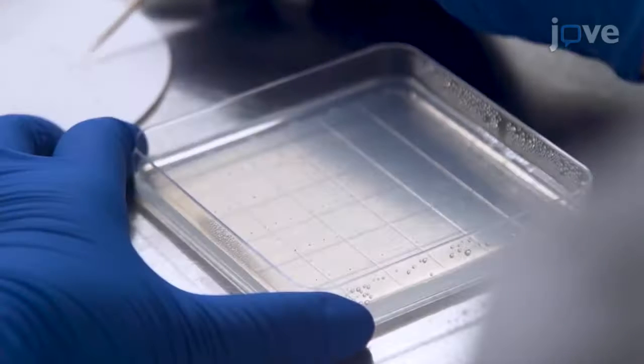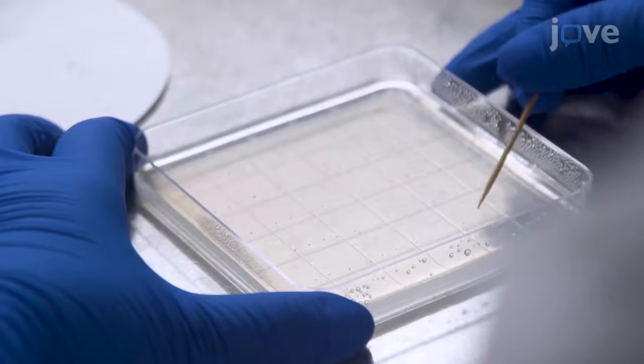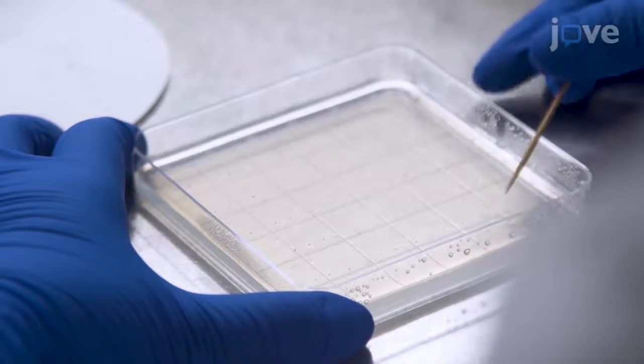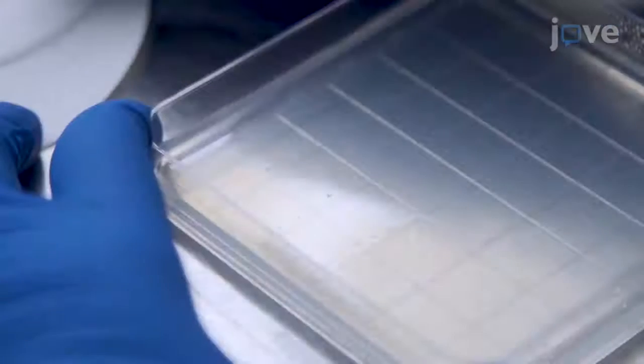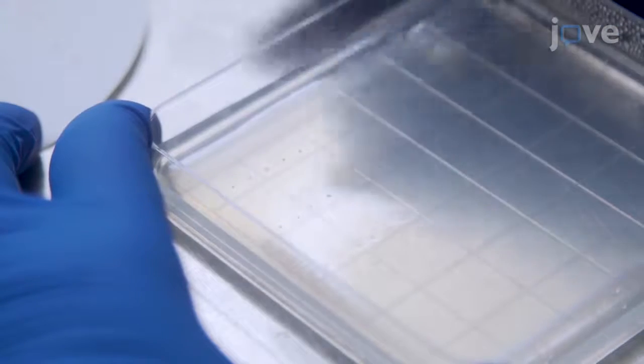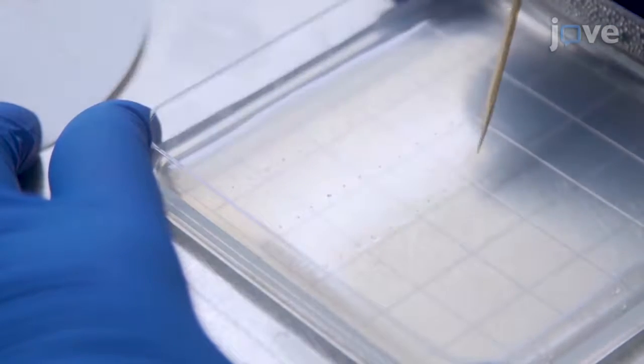To grow the plants, ensure that Arabidopsis seeds are sterilized in 70% ethanol for 10 minutes and sowed on agar plates with one-half-strength Murashige and Skoog nutrients.